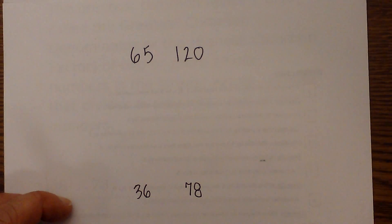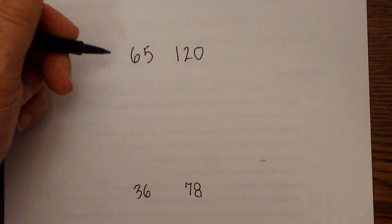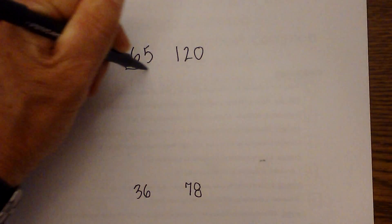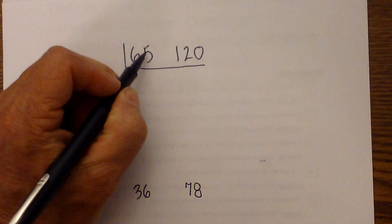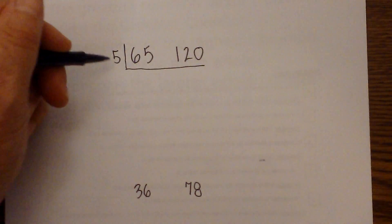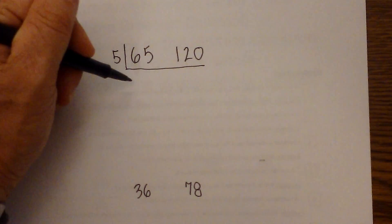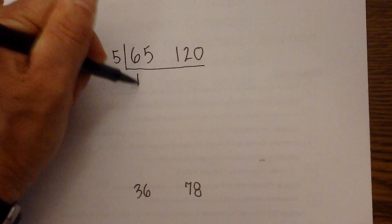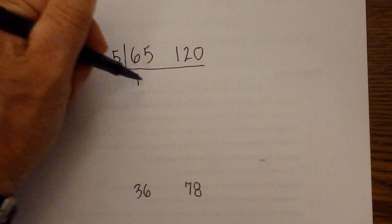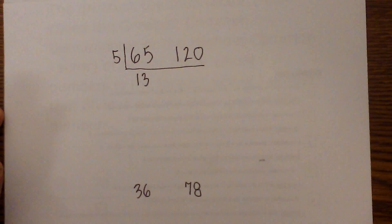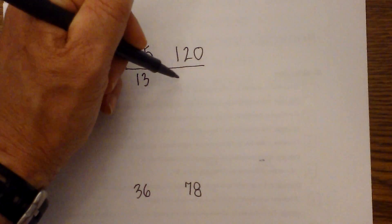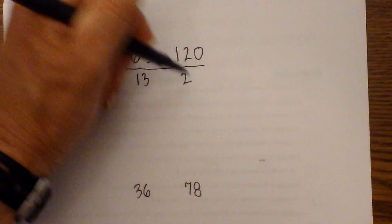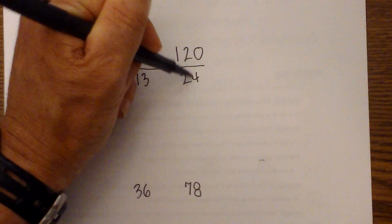Okay, let's go ahead and work another one. We have 65 and 120. So I am going to draw a line underneath. And I know that because they end in either a 5 or a 0, they are both divisible by 5. So 5 goes into 65, 5 goes into 6, 1. And then 5 goes into, it will be 13. And then 5 goes into 120, that will be 2. With 20 left over, that will be 24.